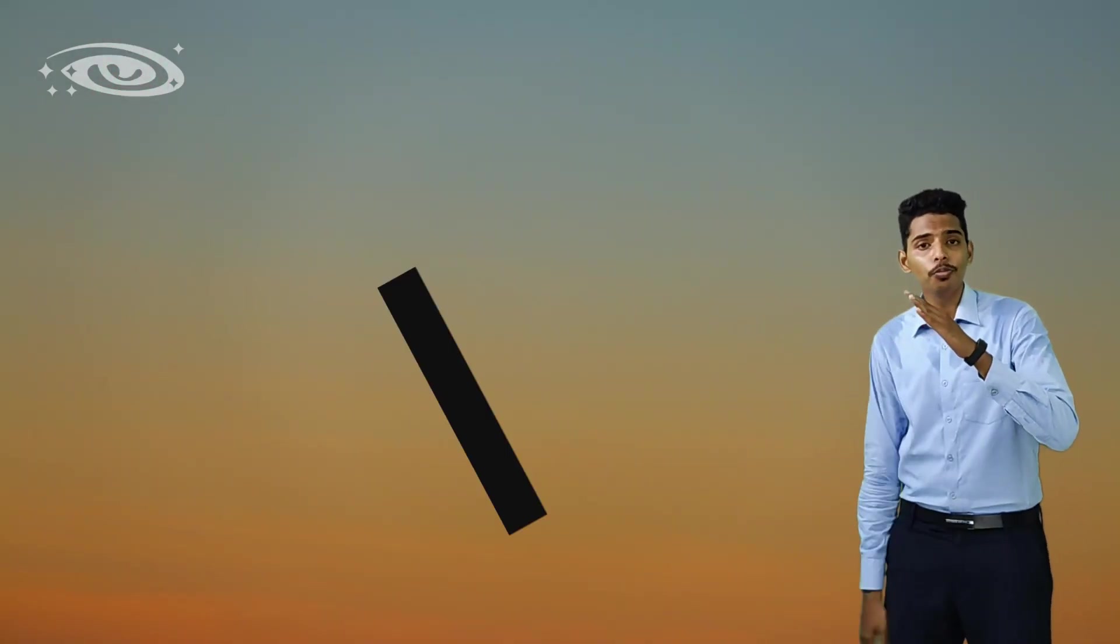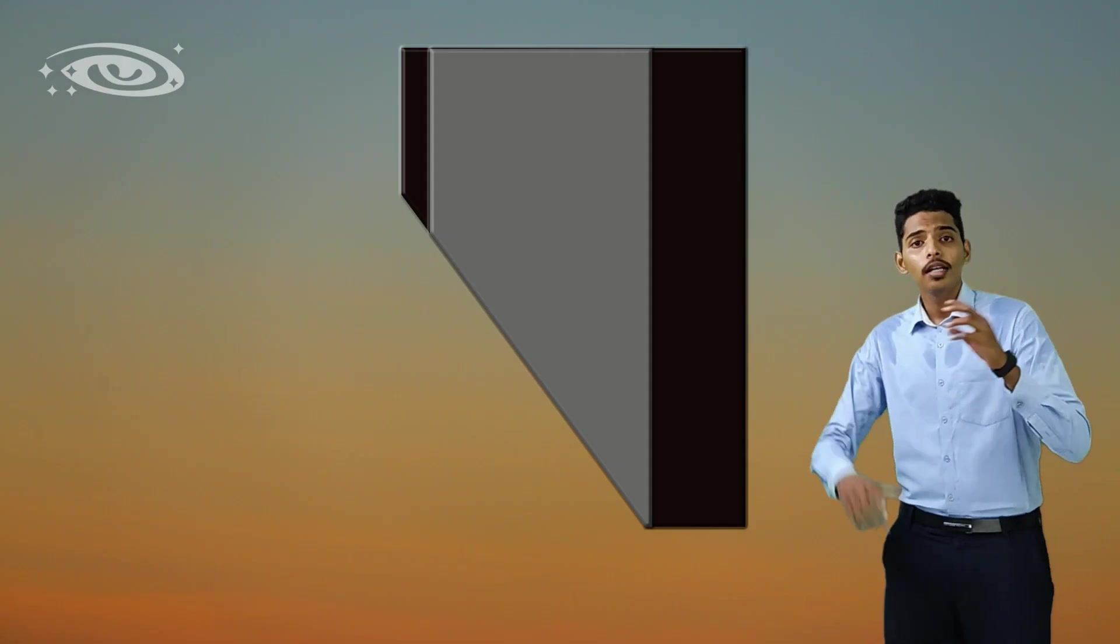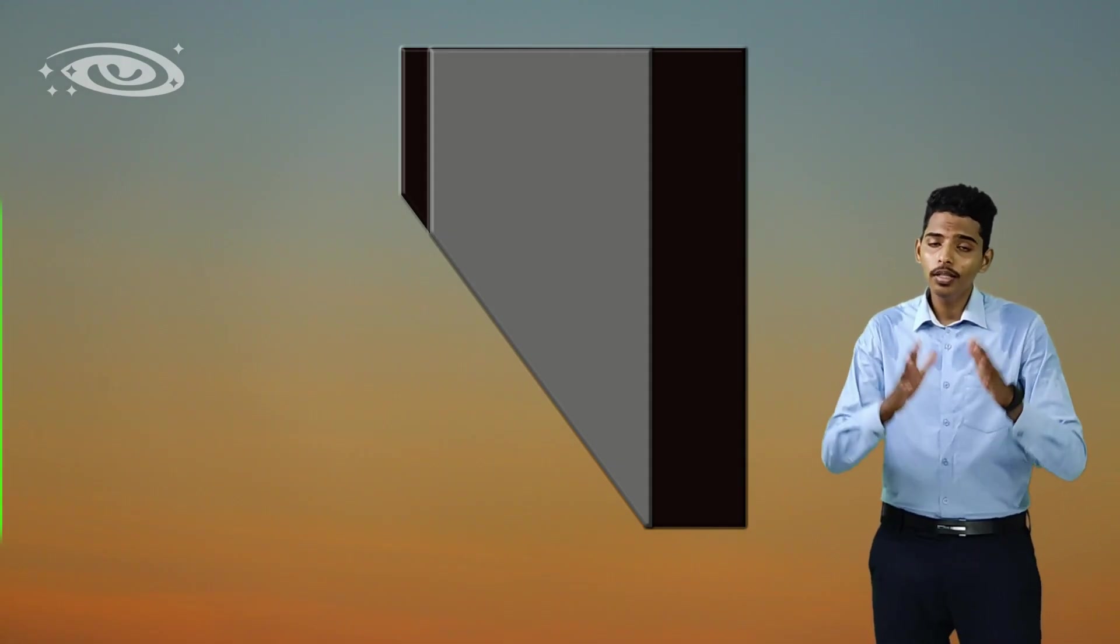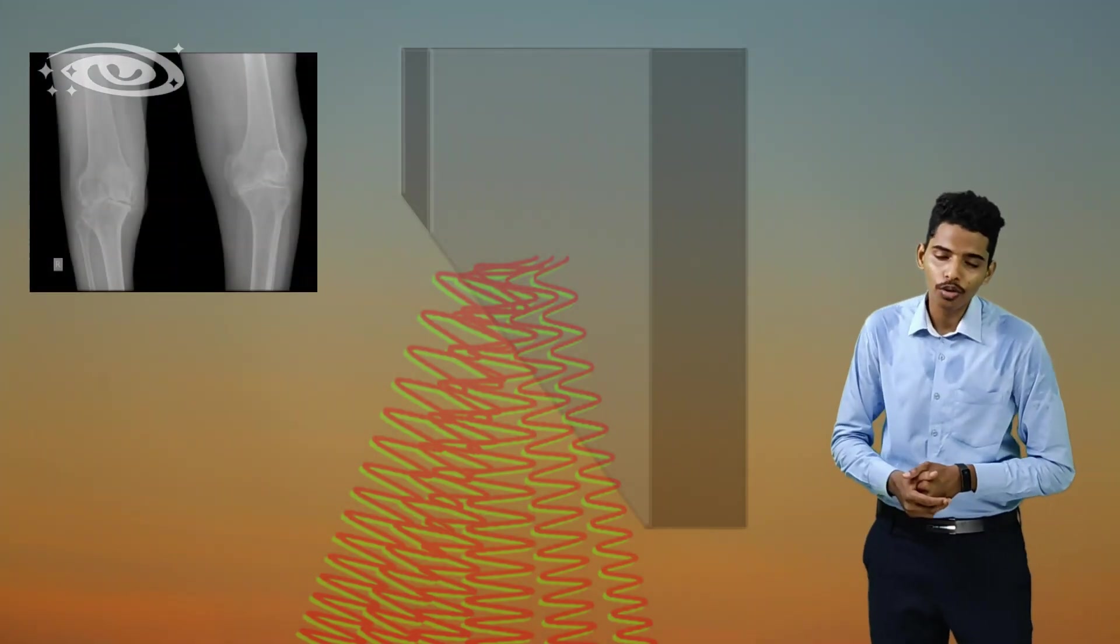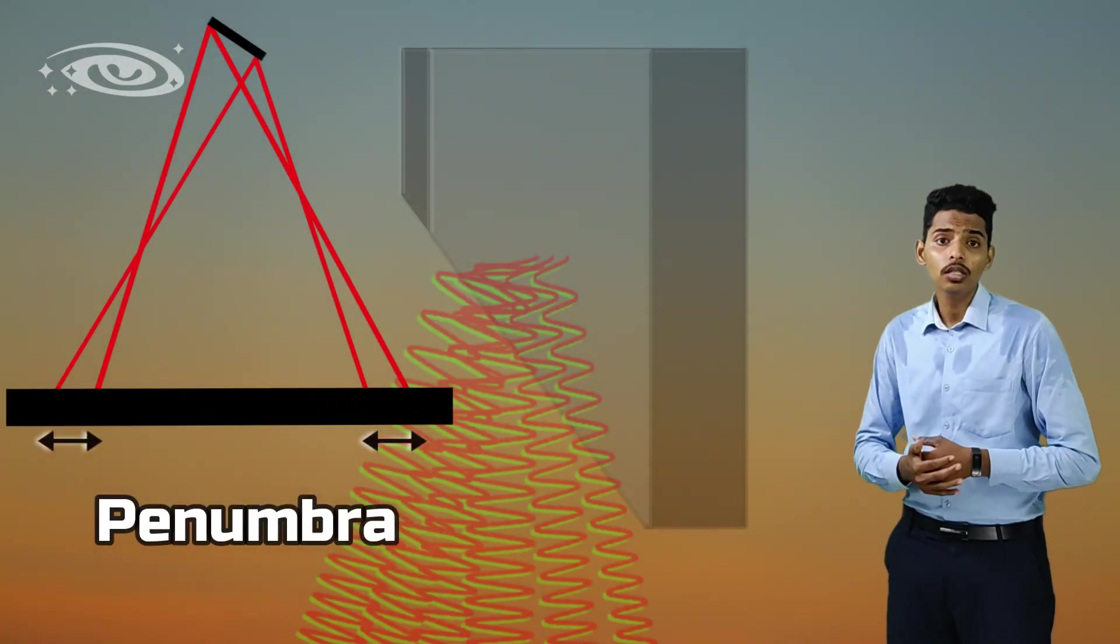If the anode angle is more than 20 degrees, the target is going to be more angulated, so that the x-ray beam size is going to be increased, so that the sharpness in the radiograph is going to be reduced and the penumbra is increased.